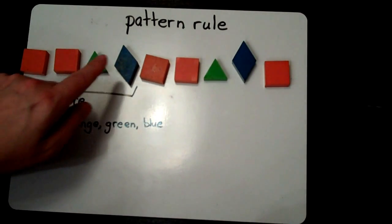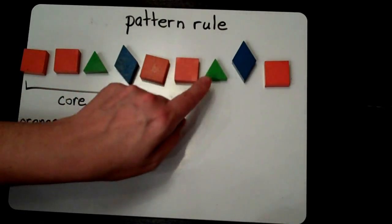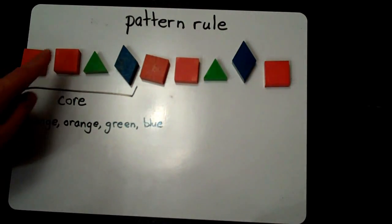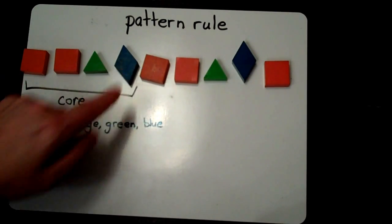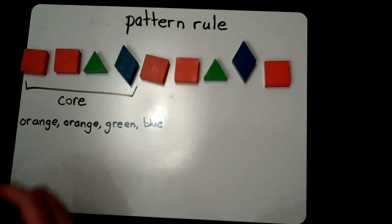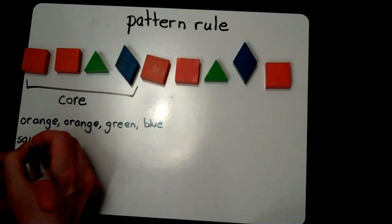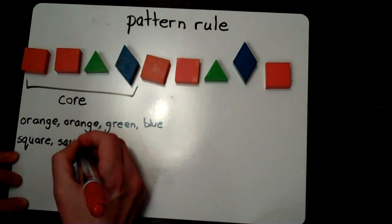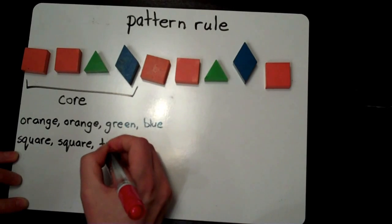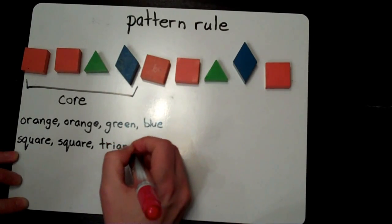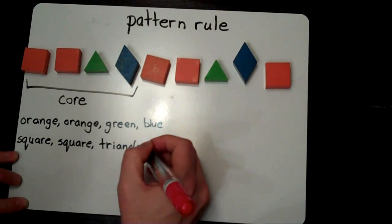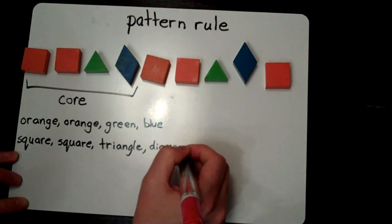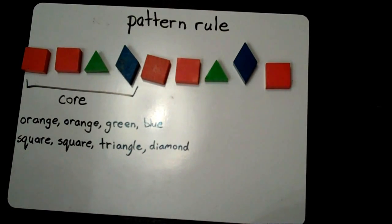Square, square, triangle, diamond. Square, square, triangle, diamond. Square. The core would be square, square, triangle, diamond. So the pattern rule would be square, square, triangle, diamond. Both are correct.